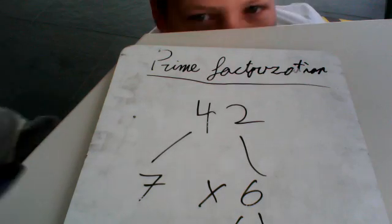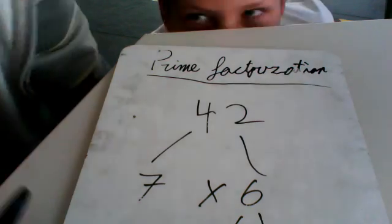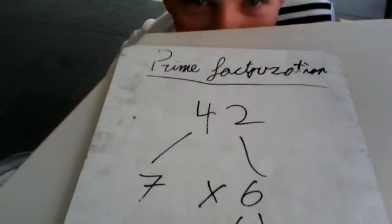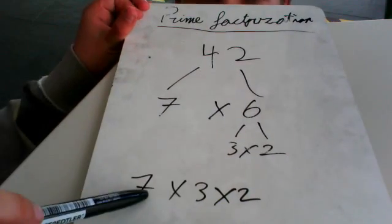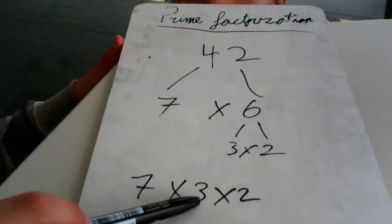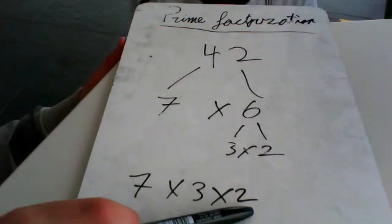So then you've got your prime factorization, which is 7 times 3 times 2.